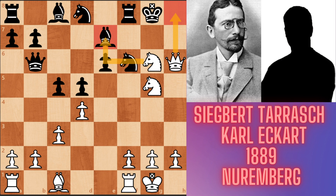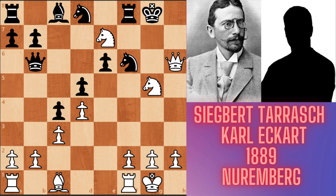Tarrasch played Knight g6, and now White has a mate threat from two different squares: Queen h7 and Queen h8. After Knight takes g6 and e7, Black has no defense for these two threats and resigned. If Black continued with c4, after Knight takes e7 it's checkmate. Or after Queen h8 it's checkmate, because the f7 square is controlled by White's other Knight.